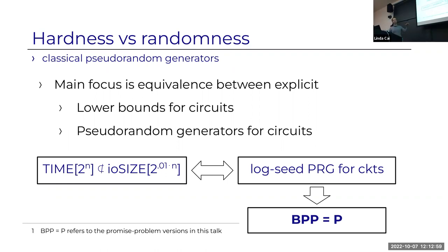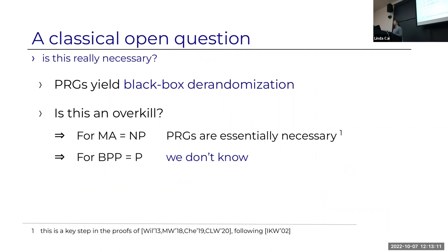BPP and P in this talk are the promise-problem versions. The PRGs yield a black-box type of derandomization: one PRG that's good for all circuits and all algorithms, and we don't even look at the code of the algorithm when generating it. Starting in the early 2000s, the question of whether this is overkill has been studied. We know from the last decade that for non-deterministic derandomization—MA equals NP type results—the black-box approach is necessary. But for the classical setting of BPP equals P, the question is wide open. There's been no unconditional progress for two decades.